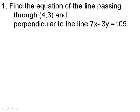Number 1. Find the equation of the line passing through the point 4, 3 and perpendicular to the line 7x minus 3y equals 105.